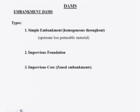Embankment dams may be classified into three parts. One is a simple embankment — that means homogenous throughout, with upstream less permeable material. The second is an impervious foundation, and the third is an impervious core or zoned embankment.